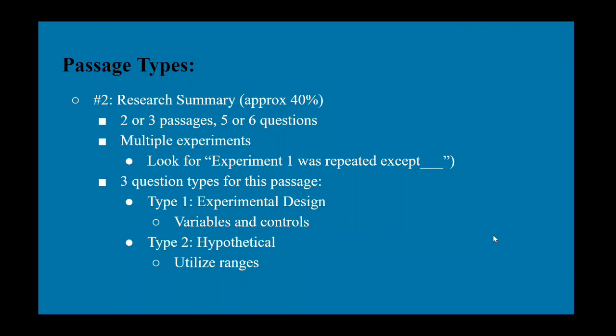The second passage type is research summary which is also approximately 40 percent or two to three passages with five to six questions each. In these there are multiple experiments. So they'll run an experiment and you have to read about the experiment, understand what they're doing, and then they'll repeat the same experiment but with a new variable. So look for the phrase experiment one was repeated except blah blah blah. That is a telltale sign that you're looking at a research summary passage and they're going to ask you a lot of questions about variables and controls and ranges and all sorts of data.